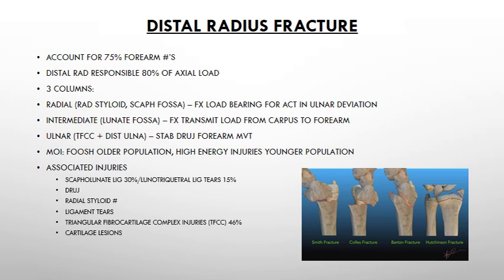After a person has fallen or sustained a distal radius fracture in a high-energy accident, always be on the lookout for associated injuries. These include scaphoid-lunate ligament injuries in 60% of cases, lunotriquetral ligament tears in 15%, DRUJ injuries, a radial styloid fracture, ulnar styloid fracture on x-ray, other ligament tears, and TFCC injuries, which occur in 46% of distal radius fracture cases, as well as other cartilage lesions.